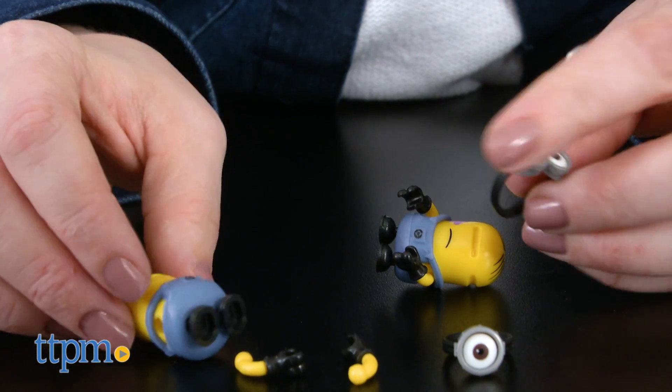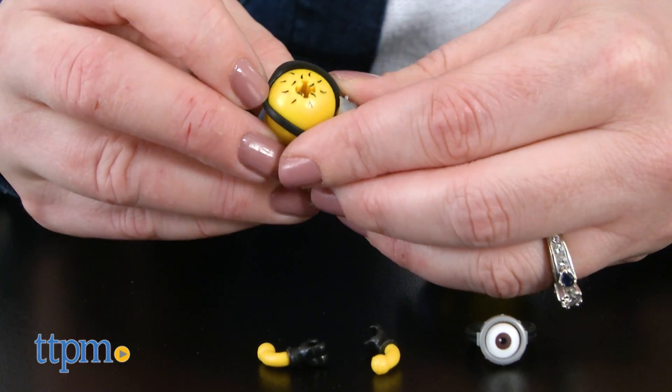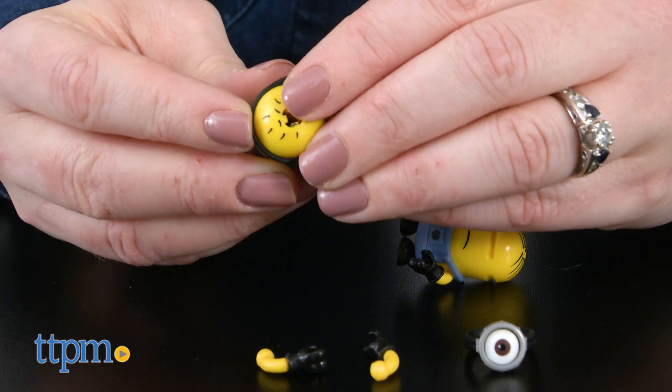All of the minions' parts, including overalls, goggles, arms, and feet are interchangeable, which means kids can mix and match to create all new minions.